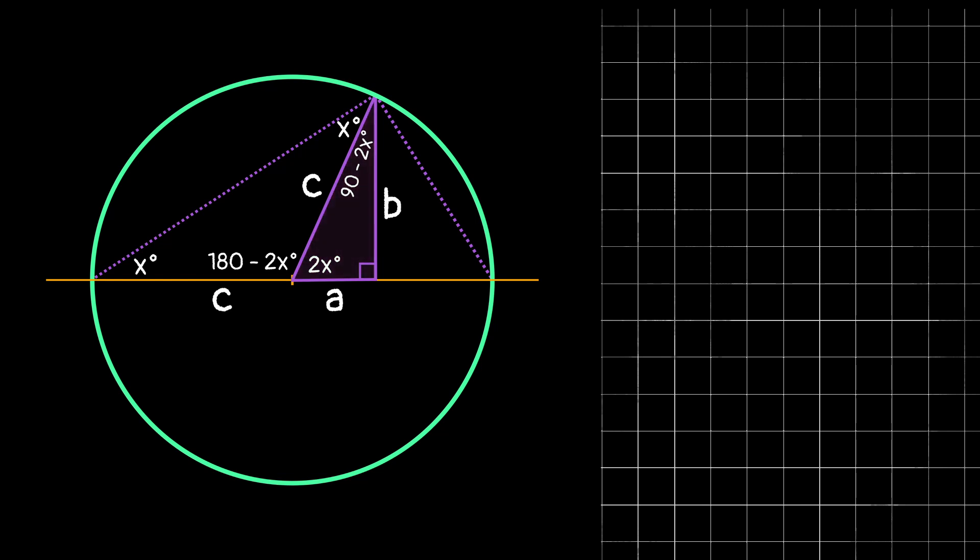Now if we look back at this top vertex, we actually know that this forms a right angle. And we know that because of Thales theorem, which I'm not going to go into depth in this video, but feel free to pause and think about why that might be true, and let me know if you'd like to see a more in-depth video on why that is true.